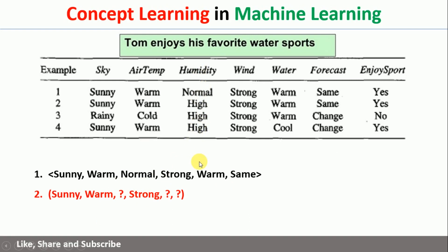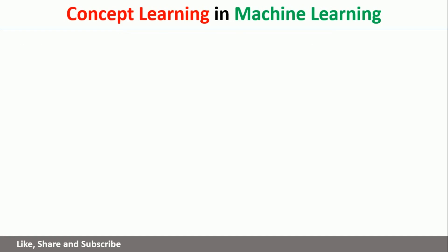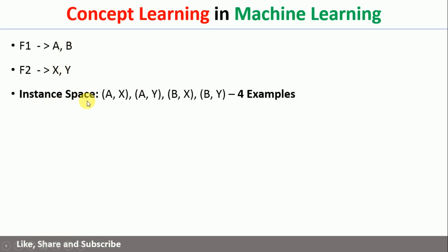That is how we write the solutions. Now, if I go on writing the solutions manually for this particular example, it will take a lot of time. So I will take one simple example to show how to write the instances as well as the possible solutions. Let us say that we have two features F1 and F2. F1 can take two values and F2 can take two values — AB and XY respectively. Now how many possible instances are there? That is what is called the instance space. In this case the instance space is AX, AY, BX, BY.